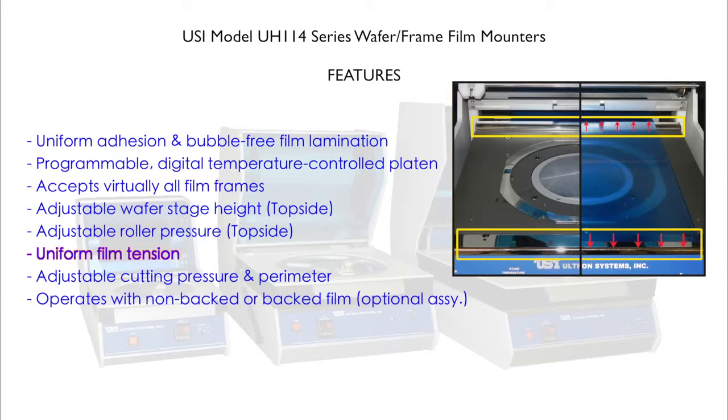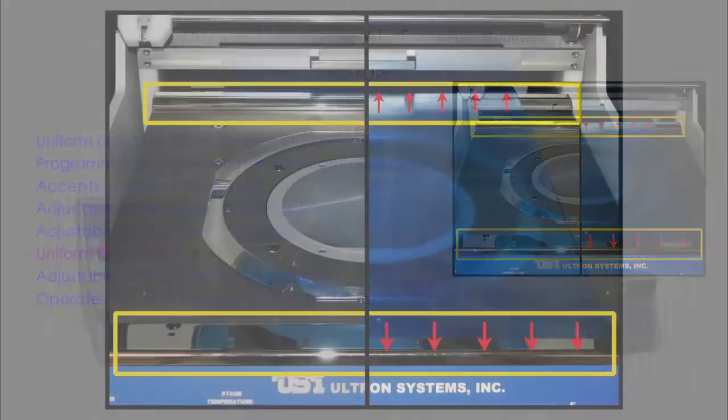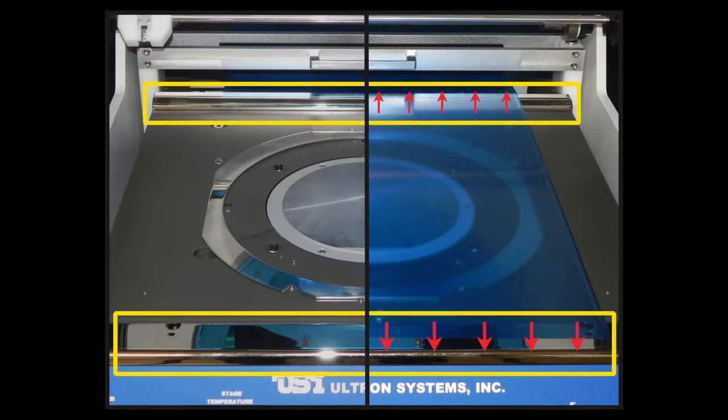Uniform film tension. Film tension is uniformly maintained by film tensioner bars, aiding in bubble-free lamination.